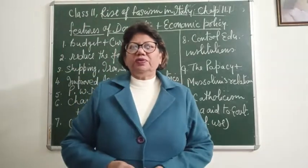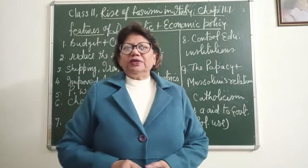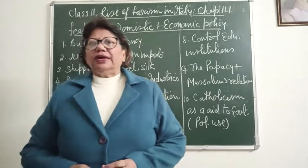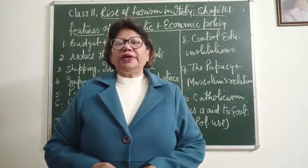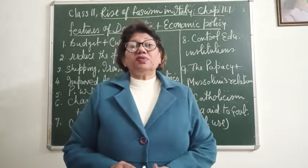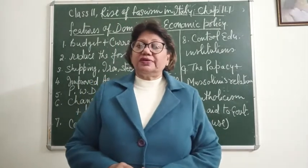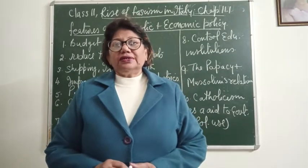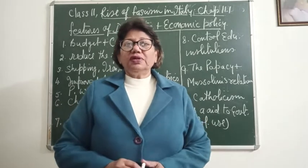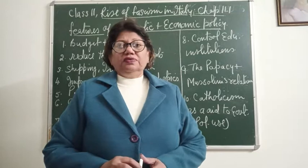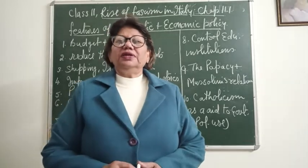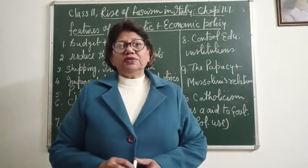Hello children, once again I welcome you in history online class and we are doing chapter 11, the rise of fascism in Italy. In my previous lesson I had explained the causes, the main reasons which forced Mussolini to become the prime minister in Italy. And later the king also started supporting Mussolini because he knew that if he would not support the fascist party, his own regular army would oppose him.